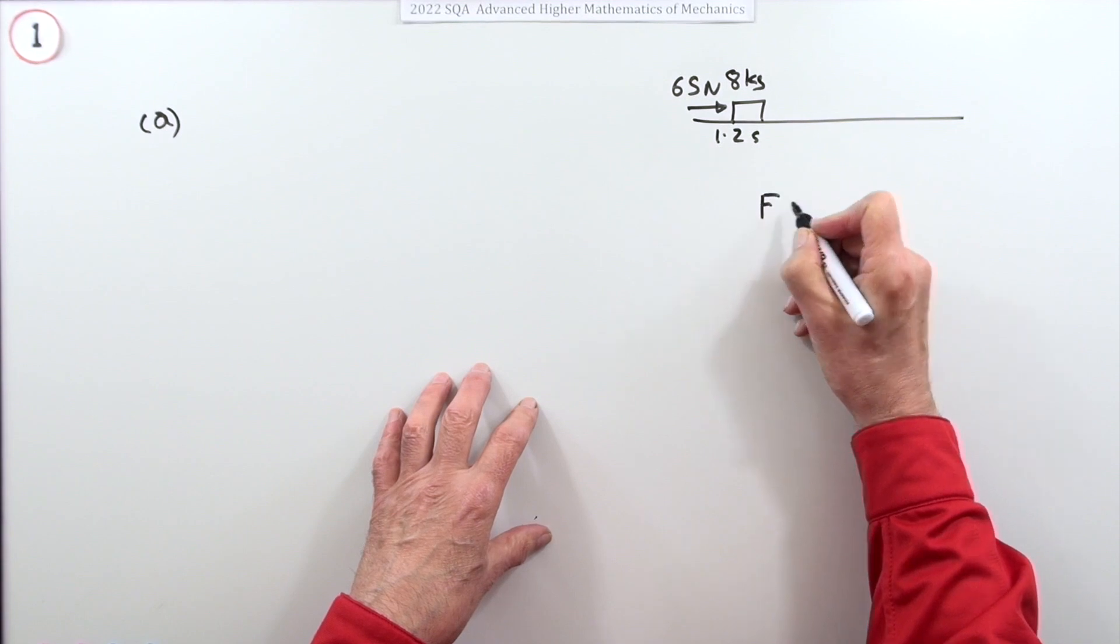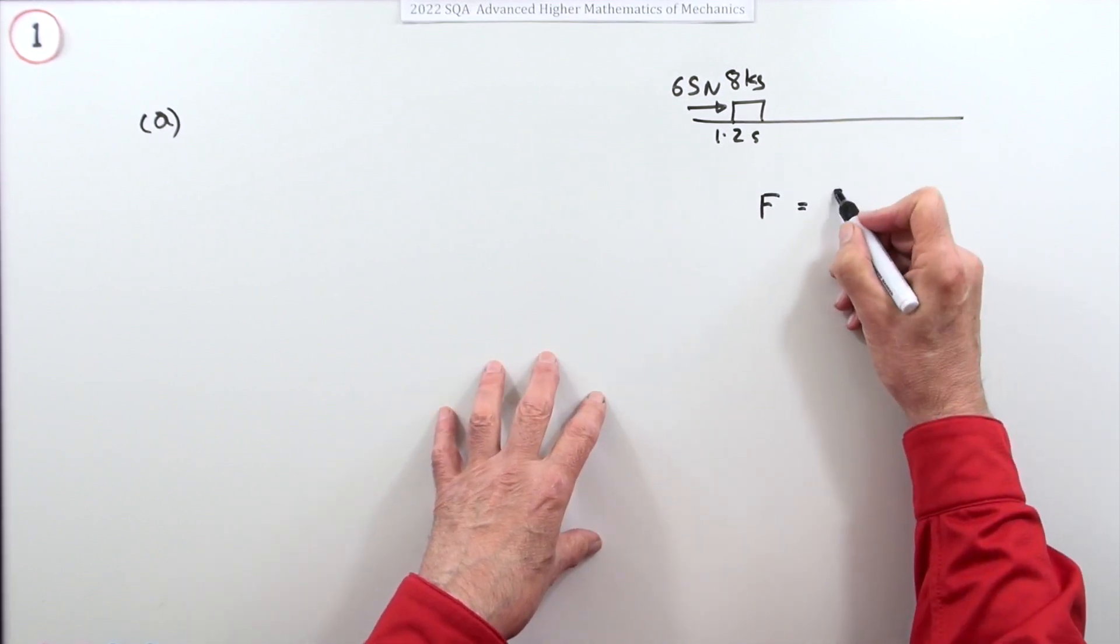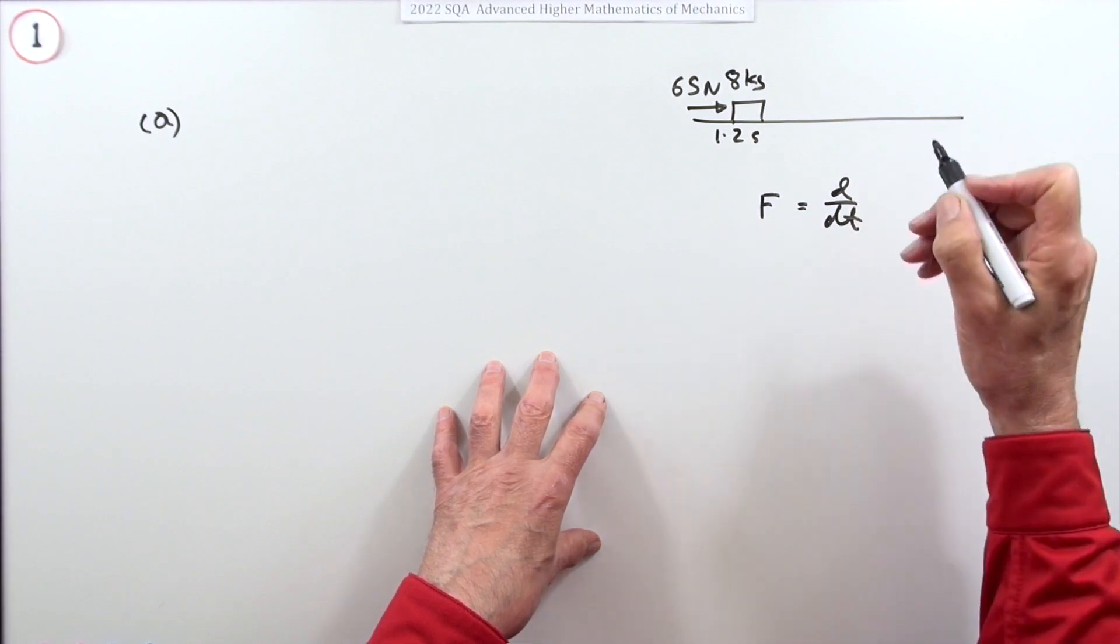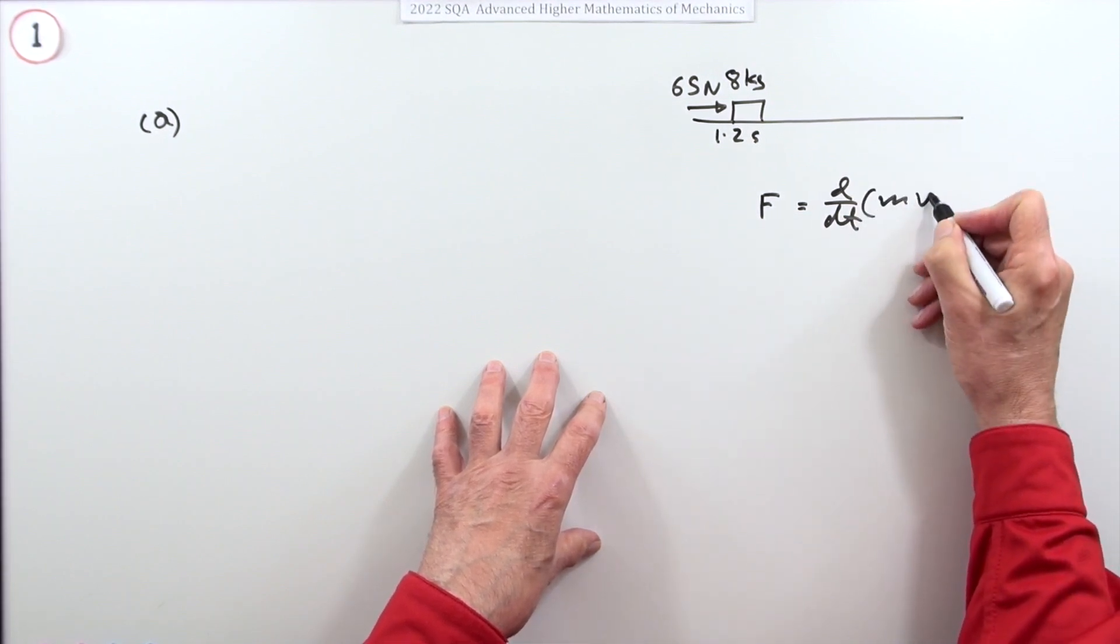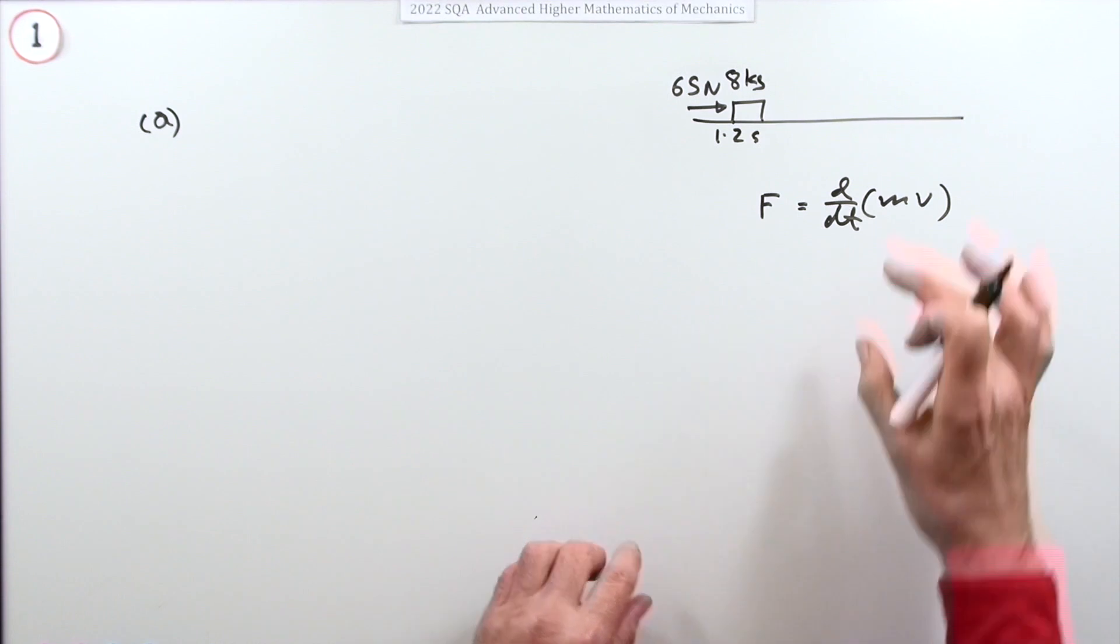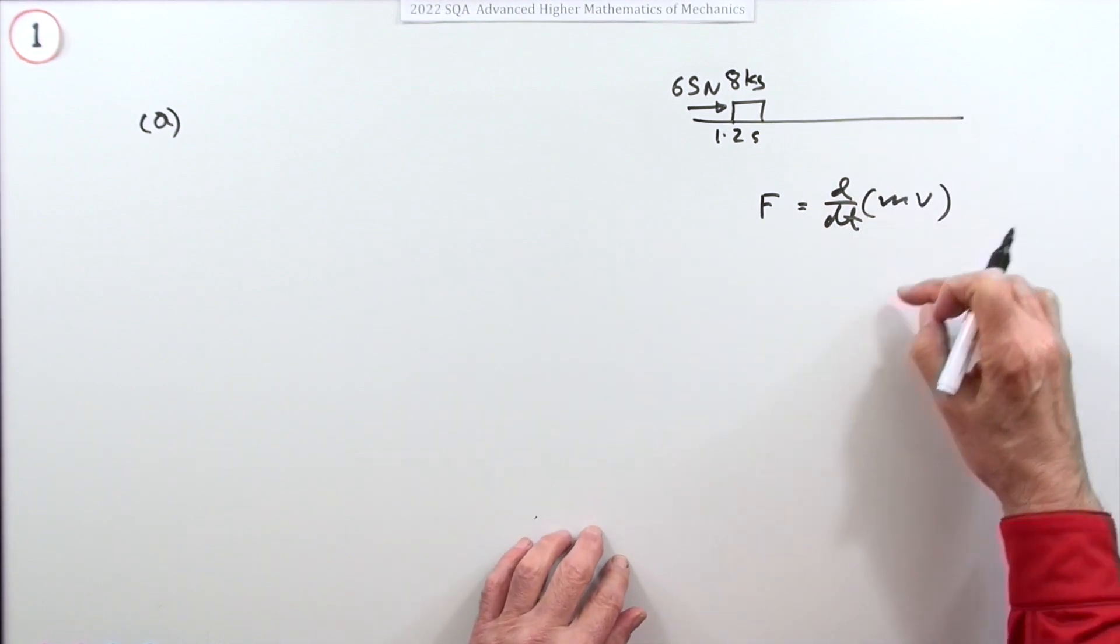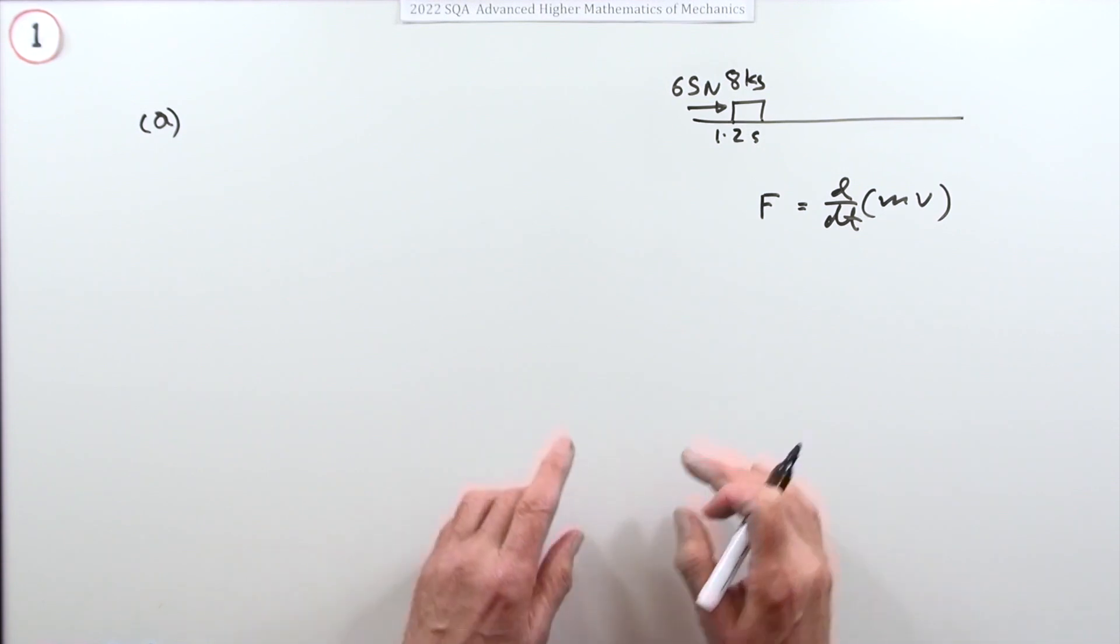If you apply a force then that will change the momentum over a given time. So the rate of change of momentum—if you just pop that over there, you've got your dv by dt, F equals ma for a constant mass.